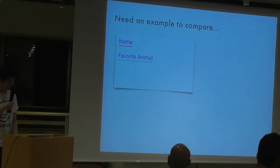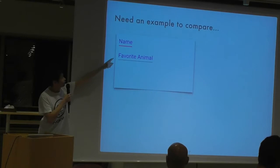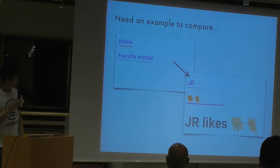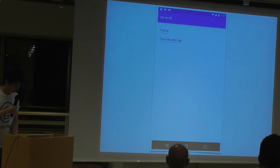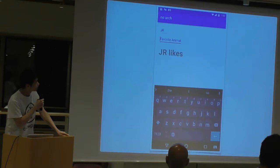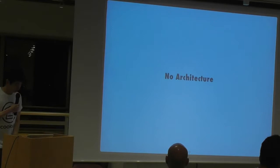We need an example so we can make comparisons. Let's say we have a standard form asking for a name and a favorite animal. As you key in the name — say JR — it generates an output saying 'JR likes dog and cat.' What's important here is that as you type, the output changes itself. There's no button for that. Let's see how we can implement this with no architecture at all.